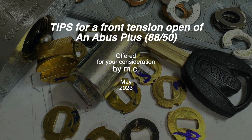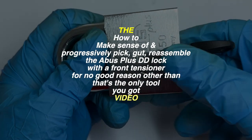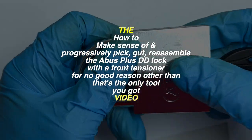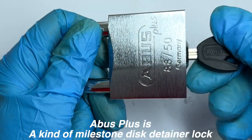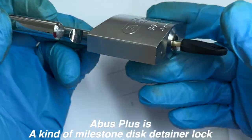Howdy. Today we're going to be looking at the Avis Plus, a kind of milestone disk detainer lock, and we're going to try it with a front tensioning pick.